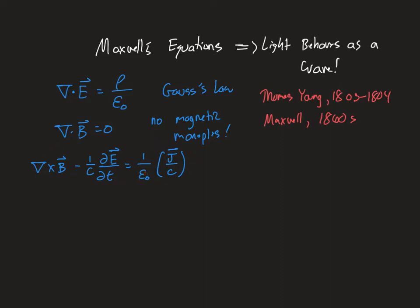The next one tells us that the curl of the B field can be created by a current, and also a changing E field — or rather, a changing E field can create a current. All together this is called Ampere's law. And then finally we have an equivalent statement with the E and B fields switched, which is Faraday's law.